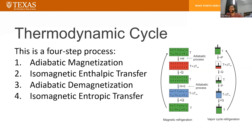Since the overall energy isn't lost and total entropy isn't reduced, you get a net result of the material heating up. That leads into isomagnetic entropic transfer: the heat added by the magnet is removed by a heat sink — typically a fluid or gas, most commonly liquid helium. The magnetic field is held constant to prevent the dipoles from reabsorbing heat. Once the material has cooled to approximately the heat sink temperature, the magnetocaloric material and heat sink are separated, and we move into adiabatic demagnetization — the actual cooling step.